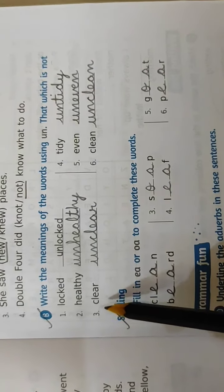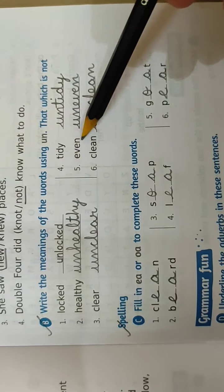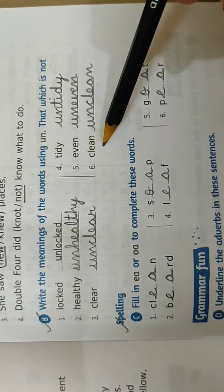Healthy, unhealthy. U-N-H-E-A-L-T-H-Y, unhealthy. Clear, unclear. U-N-C-L-E-A-R, unclear. Tidy, untidy. U-N-T-I-D-Y, untidy. Even, uneven. U-N-E-V-E-N, uneven. Clean, unclean. U-N-C-L-E-A-N, unclean.